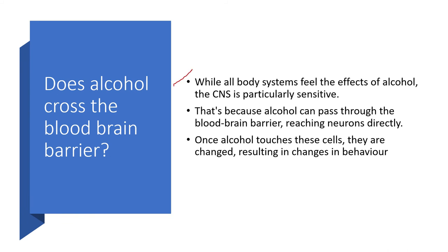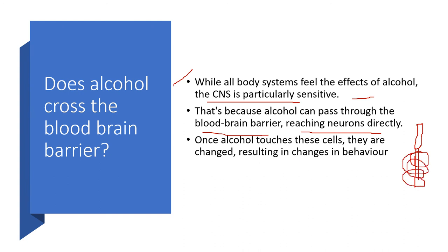Does alcohol cross the blood-brain barrier? Yes. While all body systems feel the effects of alcohol, the CNS — the central nervous system, especially the brain — is particularly sensitive. Alcohol can pass through the blood-brain barrier easily because the molecule is very small, and it can dissolve fats, reaching the neurons directly and damaging their cell membrane. The neuron's axon is also covered with fatty myelin layers that help the flow of electrical impulses from one cell to another, and this can be damaged. Acute alcohol damage can cause major damage to these cells, leading to short-term memory problems such as Korsakoff syndrome.